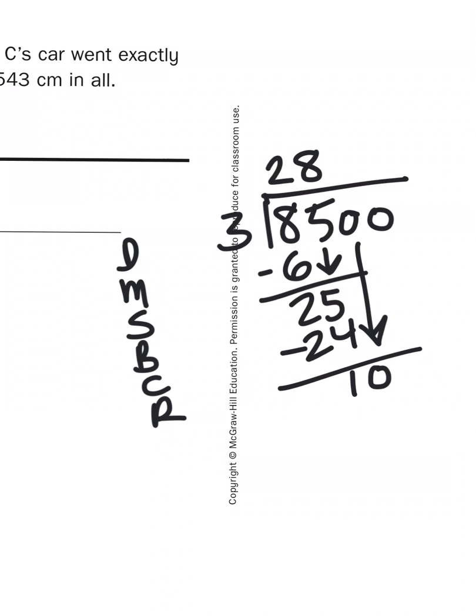So, now I can bring down the 0. That leaves me with 10. 10, again, is bigger than my divisor. So, now I have to repeat the process once again. I'm going to divide 10 by 3, which gives me 3 groups because 3 times 3 is 9. Subtract the difference. I'm left with 1.